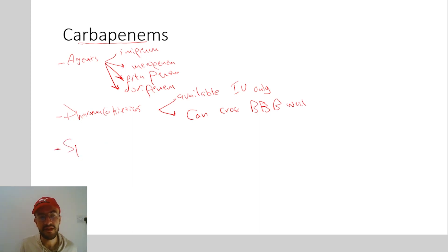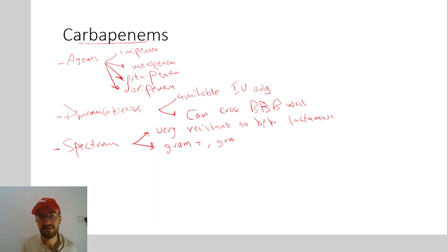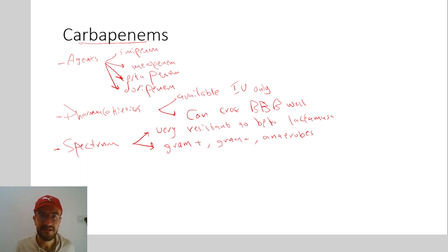Regarding the spectrum of the carbapenems, they are very resistant to the beta-lactamase enzyme — more resistant than the cephalosporins. They have a wide spectrum, being active against gram-positives, gram-negatives, and anaerobes. The carbapenems have limited use and are considered last resort antibiotics, because of the fear of the emergence of resistance against them, and they are usually reserved for very resistant organisms.